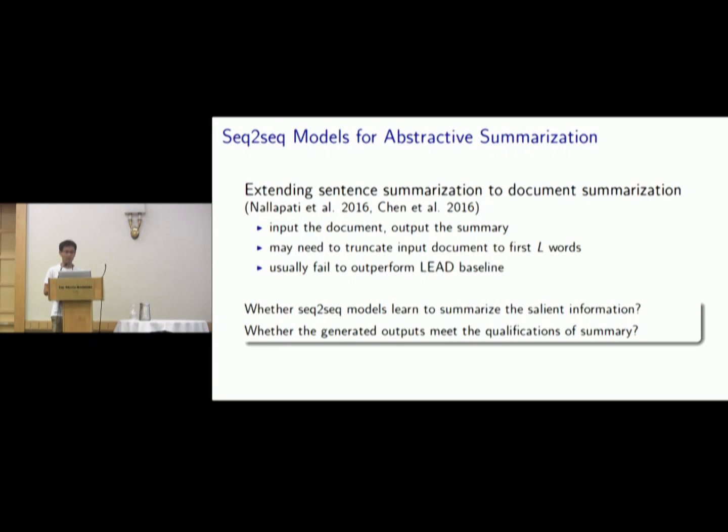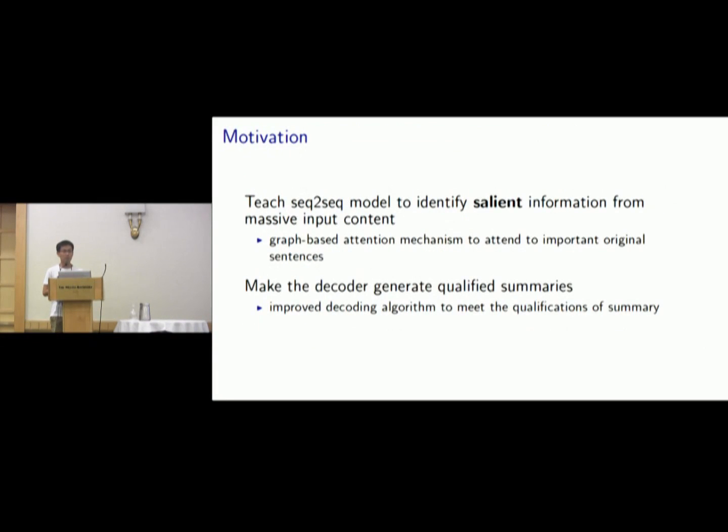There are two key points left to be considered. The first is whether sequence-to-sequence models learn to summarize the salient information, and the second is whether the generated outputs meet the qualifications of a summary. So the motivation of this work is to teach sequence-to-sequence models to identify salient information from massive input content. We achieve this by a graph-based attention mechanism to attend to important original sentences. And we also hope to make the decoder generate qualified summaries. We achieve this by an improved decoding algorithm to meet the qualifications of a summary.